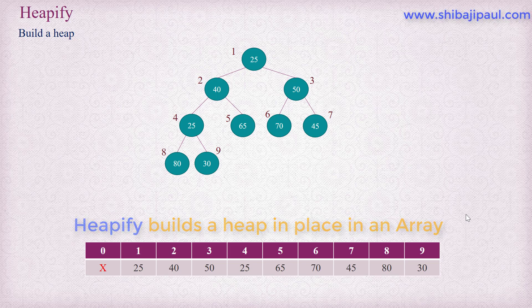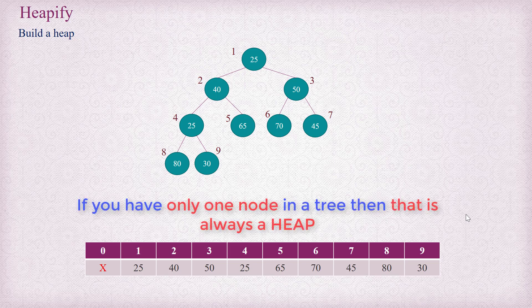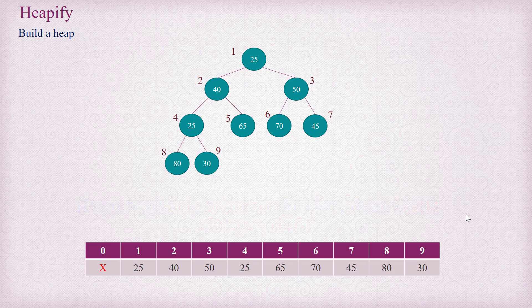We are going to apply the adjust operation that we have understood in the last tutorial for building this heapify operation. Trivially, a tree with only one node is always a heap. That is, we can always think of a heap tree rooted at any leaf. So you see that at index nine, which is a leaf, we can consider a max heap tree rooted at index nine.